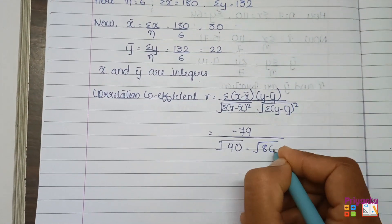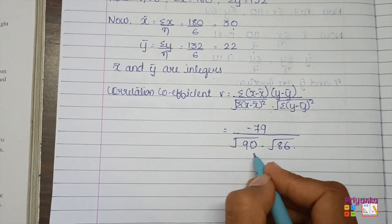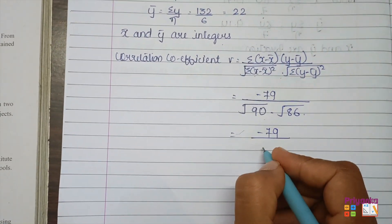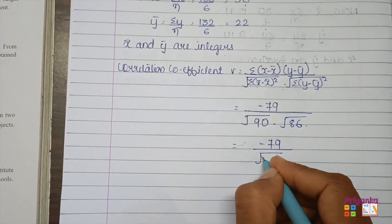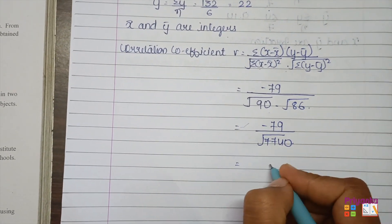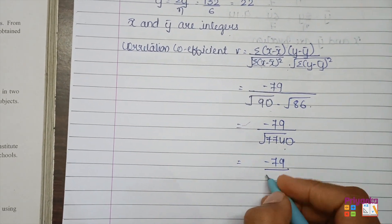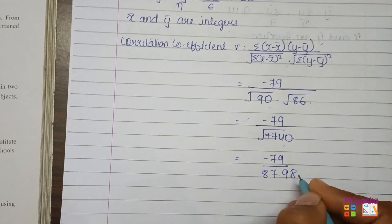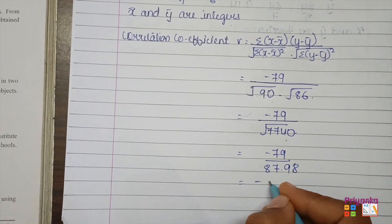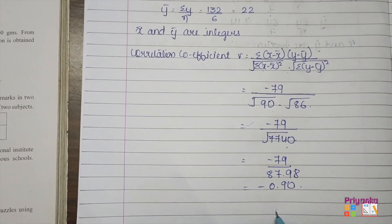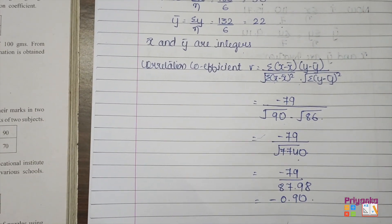Substituting into the formula: r = −79 / √(90 × 86) = −79 / √7740 = −79 / 87.98 ≈ −0.90. Hence the correlation coefficient between the price and demand of wafer is −0.90.